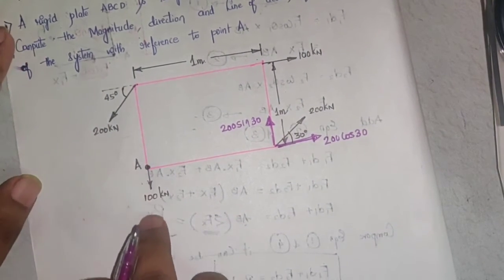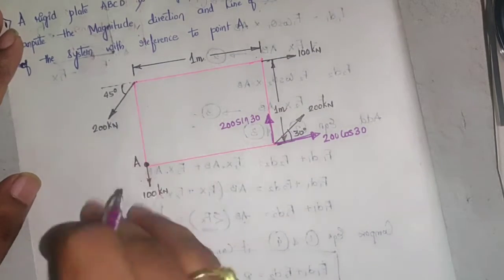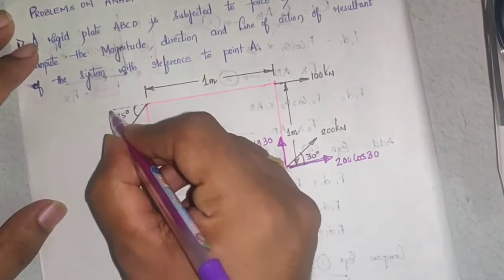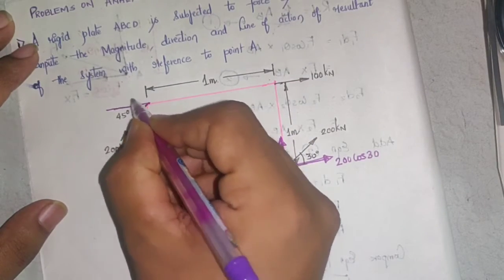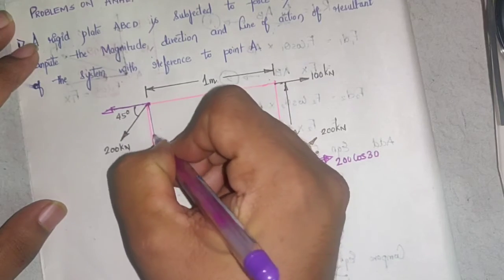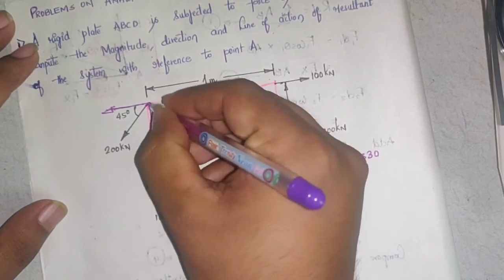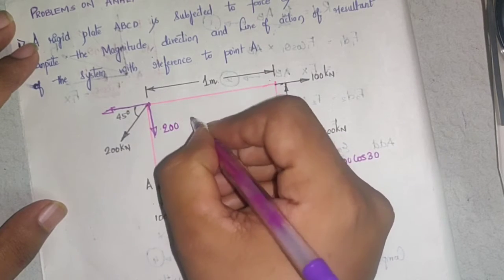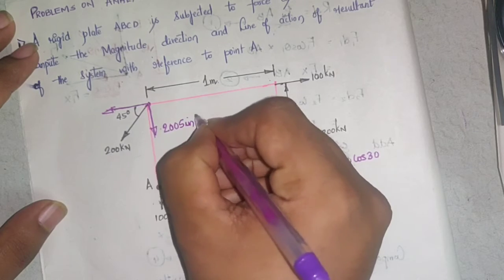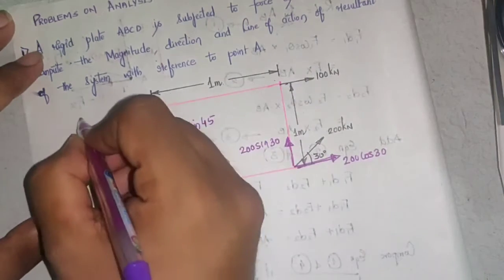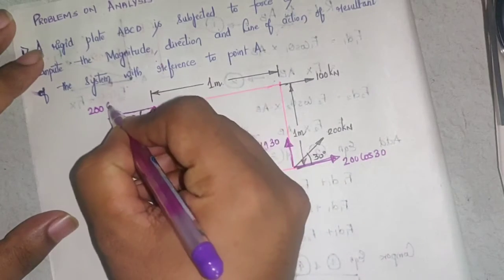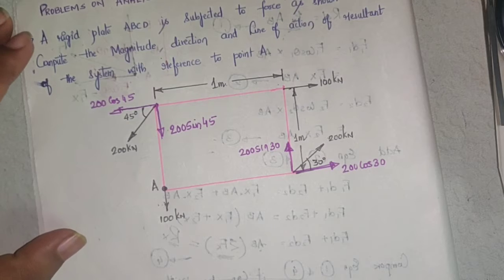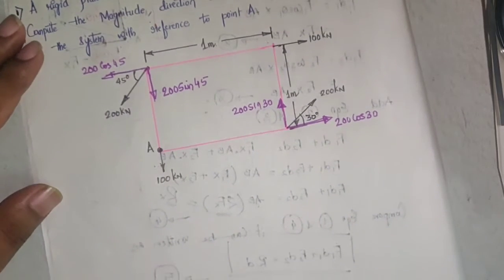The 100 kN force acting downwards has no effect in x, so we leave this. The 200 kN force is again inclined at 45 degrees, so resolve it into horizontal and vertical components. The vertical component is 200 sin 45 acting downwards, and the horizontal component is 200 cos 45 acting leftwards. Now that we have resolved all the forces, let's start grouping them in the x and y directions.